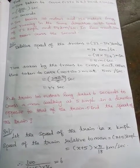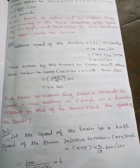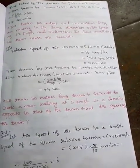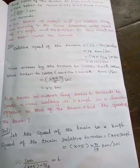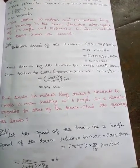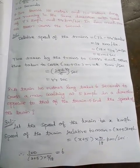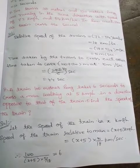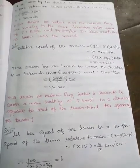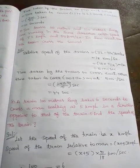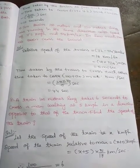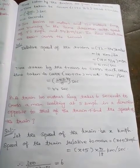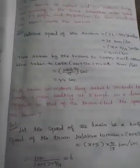Problem 8: A train 100 meters long takes 6 seconds to cross a man walking at 5 km per hour in a direction opposite to that of the train. Find the speed of the train. Solution: Let the speed of the train be x km per hour. Speed of the train relative to man equals x plus 5 km per hour, equal to x plus 5 into 5 by 18 meter per second.